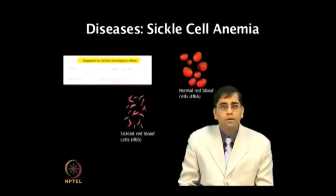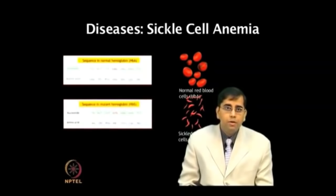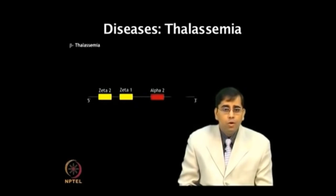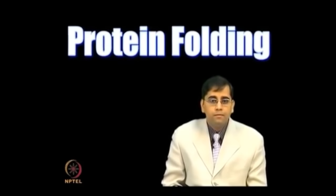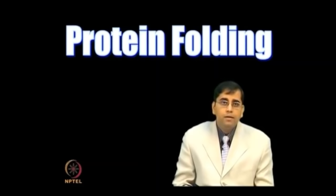Sickle cell anemia is caused by a single nucleotide substitution which converts a glutamic acid residue to valine in the beta chain of hemoglobin. Thalassemia is caused by abnormalities in hemoglobin synthesis. Protein folding is an elegant example of biological self-assembly, and understanding the mechanisms through which protein folding takes place remains challenging for the scientific community.